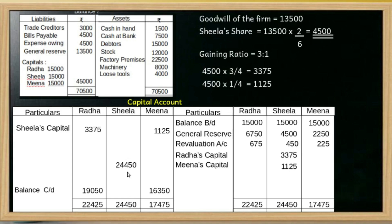In this case, Sheila's balance is 24,450. Since Sheila is retiring, her capital account balance of 24,450 is converted to a loan account. The journal entry is: debit Sheela's Capital Account, credit Sheela's Loan Account, Rs.24,450.